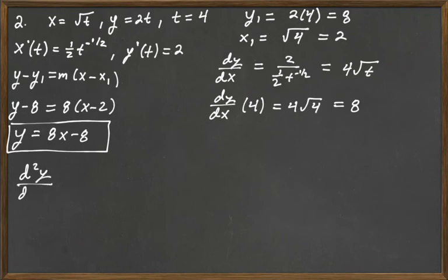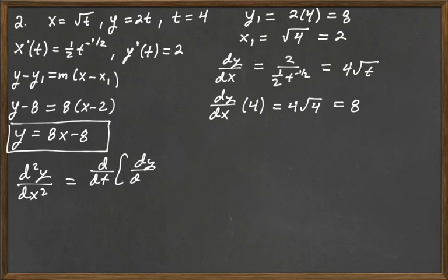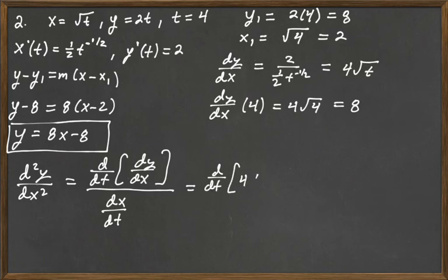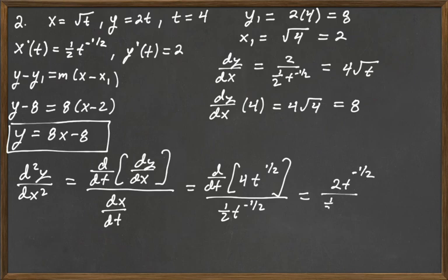Now d²y/dx² equals the derivative with respect to t of dy/dx, divided by dx/dt. That's the derivative with respect to t of 4t^(1/2), divided by (1/2)t^(-1/2). The numerator is 2t^(-1/2), over (1/2)t^(-1/2), which simplifies to 4.